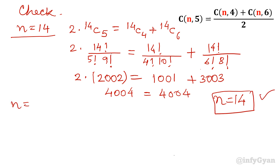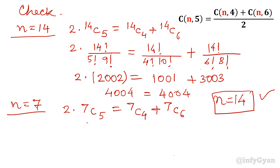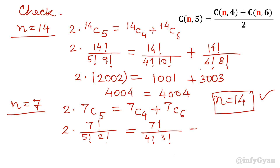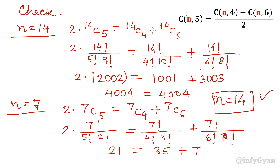Now let's check for N equal to 7. So 2 times 7C5 equal to 7C4 plus 7C6. Putting in the values: 2 times 7 factorial over 5 factorial into 2 factorial, equal to 7 factorial over 4 factorial into 3 factorial, plus 7 factorial over 6 factorial into 1 factorial. Simplifying, 7C5 gives 21, so left side is 42. 7C4 gives 35 and 7C6 gives 7, so right side is 42. So 42 equals 42 — N equal to 7 is also verified and checked.